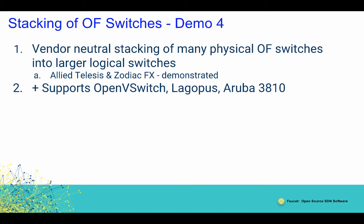As you saw in the configuration, Zodiac is manufactured by Northbound Networks, and Allied Telesis X930 is manufactured by Allied Telesis. We also support Open vSwitch, Lagopus, Aruba, HPE, Aruba 3810, and so on. The qualification criteria for an OpenFlow switch is that it must be fully OpenFlow 1.3 compliant, supporting multiple tables. We are also adding group table support shortly. It must expose all the tables and should not have any custom pipelines, because Fawcett drives software pipelines into the switch — we are looking for an OpenFlow container with multiple tables.